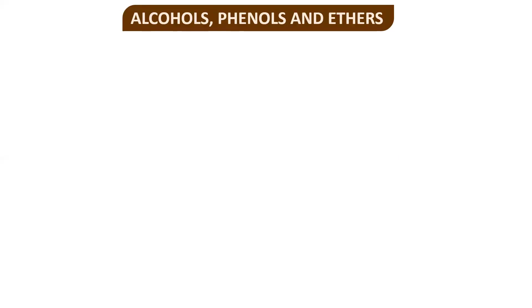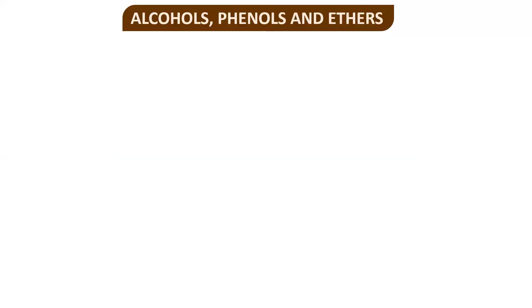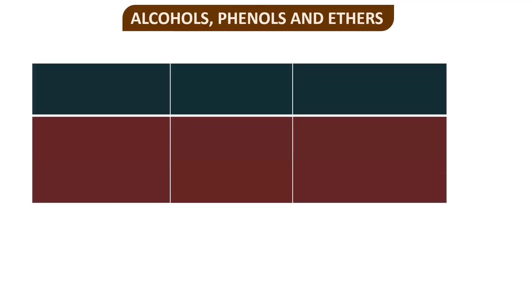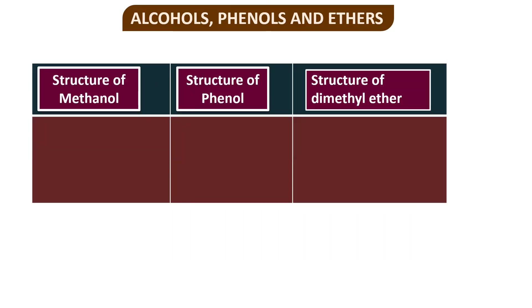Hello students. In this third module we are going to discuss the physical properties of alcohols. We'll start by looking at the structures of three alcohols: the structure of methanol, the structure of phenol, and the structure of dimethyl ether.